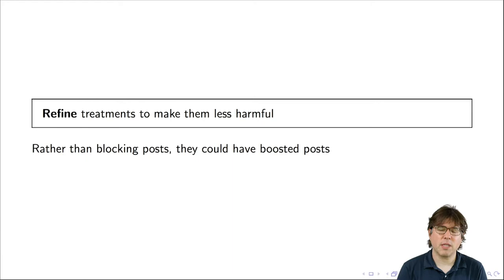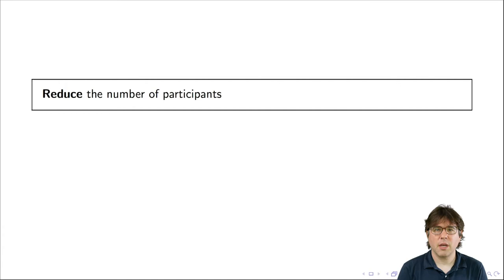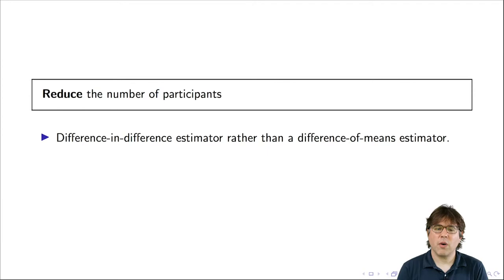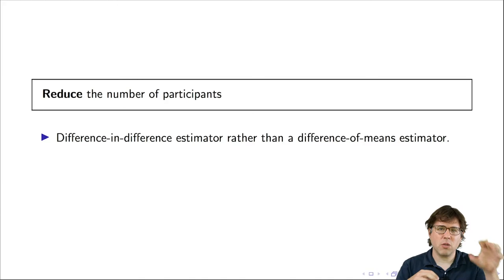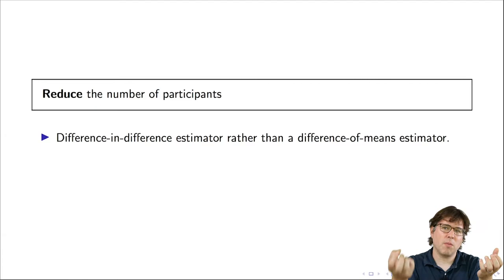The third R is Reduce — reduce the number of participants. We only want to use the minimum number of people necessary to achieve our scientific objectives, just as you wouldn't want unnecessary animals in an experiment. In this case, they used a difference-in-means estimator, but they could have used a difference-in-differences estimator, which is a more efficient statistical approach. For example, imagine a weight loss study: you randomize people into a treatment group that gets an exercise program and a control group that gets no change, then measure average weight in each group after a few months.